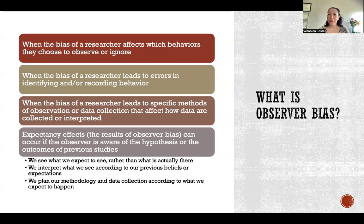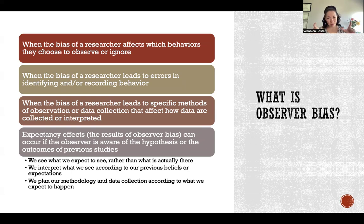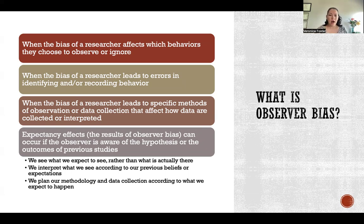When the bias of a researcher leads to specific methods of observation or data collection, that is also an example of observer bias. For example, if the observer expects only a view from one direction to be relevant, then they might set up a camera to record from that particular angle, whereas if they weren't biased, they might realize that a view from multiple angles might be equally relevant. And so their bias led them to only focus on what they expected to be relevant.